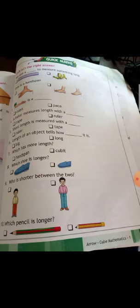Fourth answer: a tailor measures length with tape. The answer is first, tape. Fifth answer: short length is measured with a ruler. Tick on ruler, first answer. Sixth: length of an object tells how long it is. The answer is second, long.